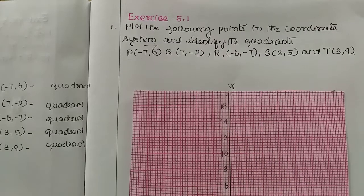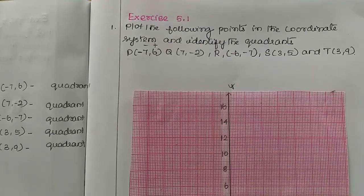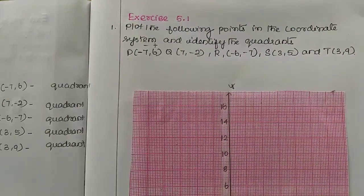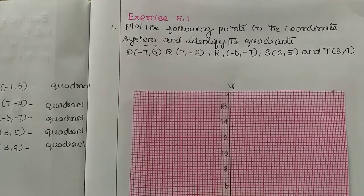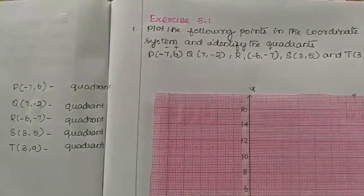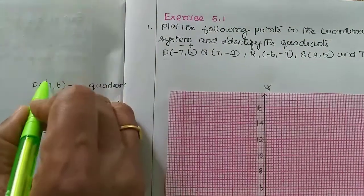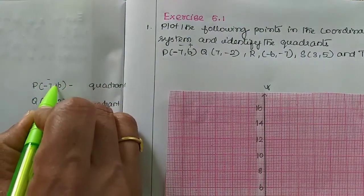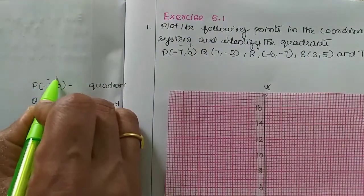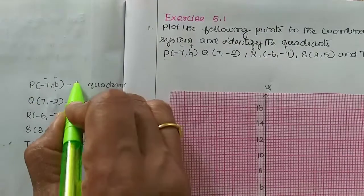So, we plot the points in the graph and tell how to identify the quadrants. There is minus 7, 6. This number is a minus number and this number is a plus number. So, minus plus is the second quadrant.